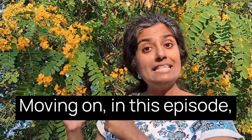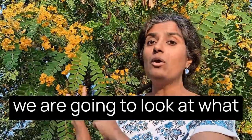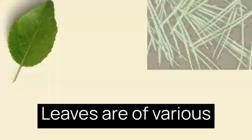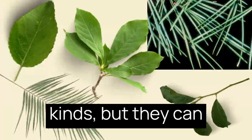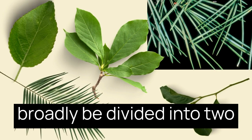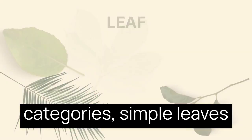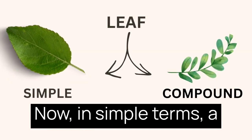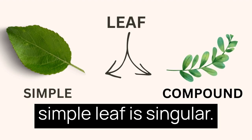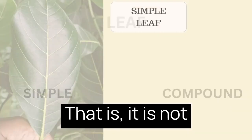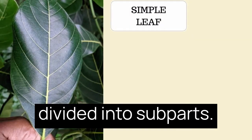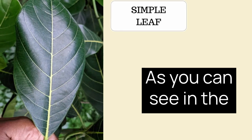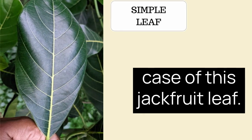Moving on, in this episode we're going to look at what are called compound leaves. Leaves are of various kinds, but they can broadly be divided into two categories: simple leaves and compound leaves. In simple terms, a simple leaf is singular — that is, it is not divided into sub-parts. It is one single piece, as you can see in the case of this jackfruit leaf.